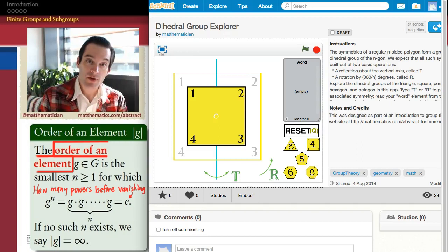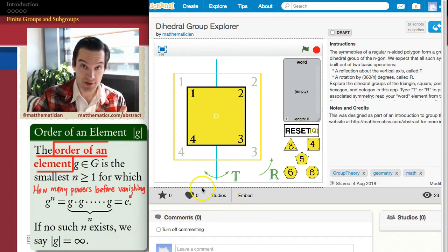The question is, what is the order of the element t, which is a reflection over this vertical line, is how I'll define it for this purpose. What is the order of that element? The question is, what power of t do I have to take before I get back around to the identity? And the identity transformation is the one in which our square hasn't moved at all. The corner that I've labeled 1 matches with the corner that's labeled 1 here, 2, 3, and 4.